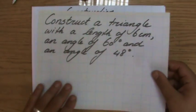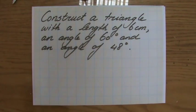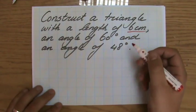I wrote down let's construct a triangle with a length of six centimeters, an angle of 60, and an angle of 48 degrees. How do you approach this? Well, let's start with the length of six centimeters.